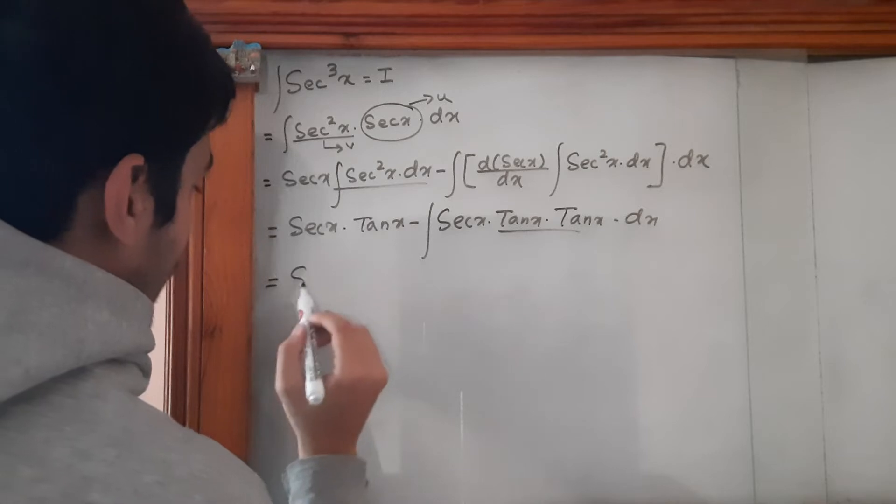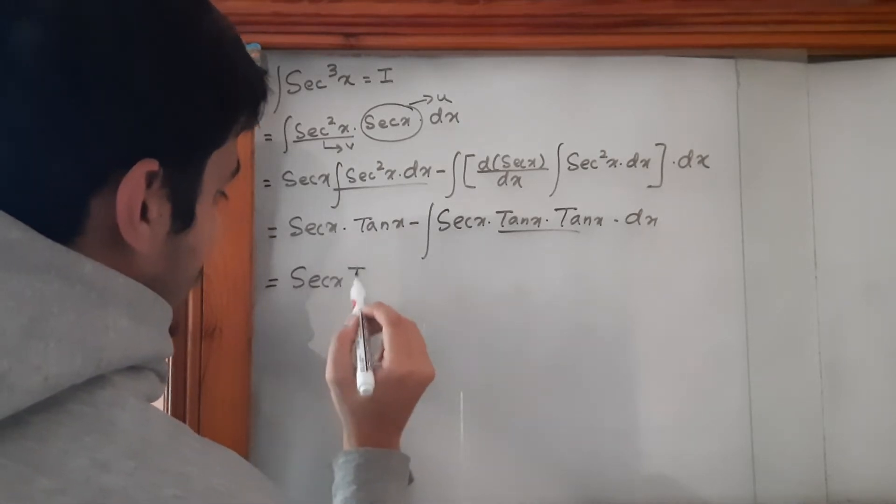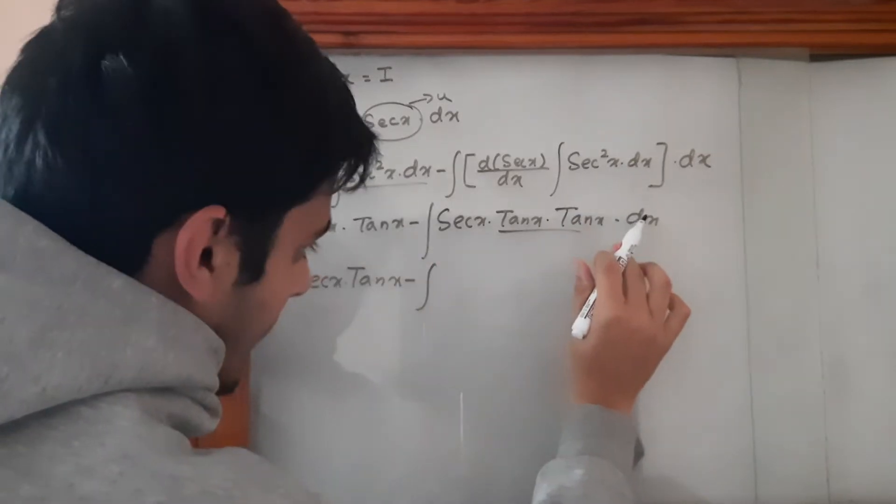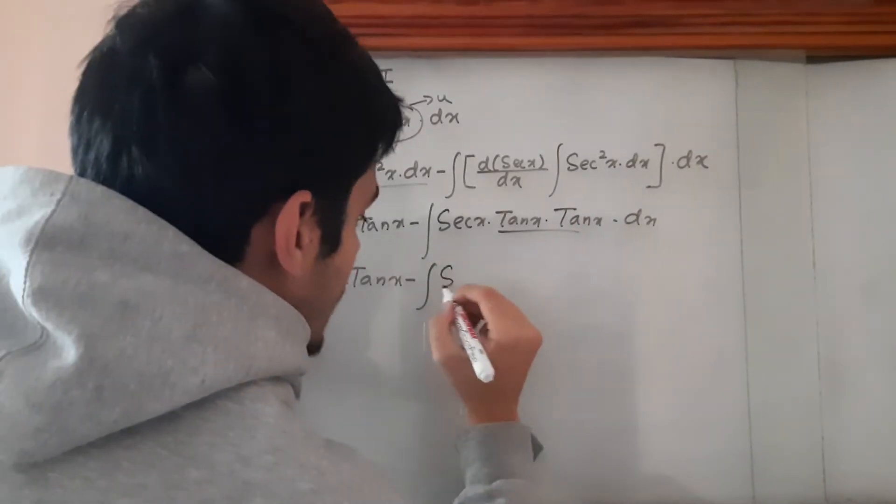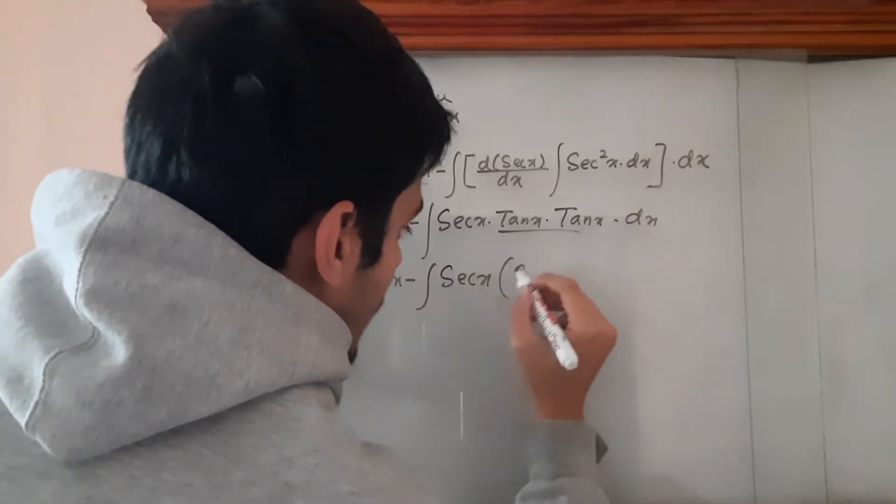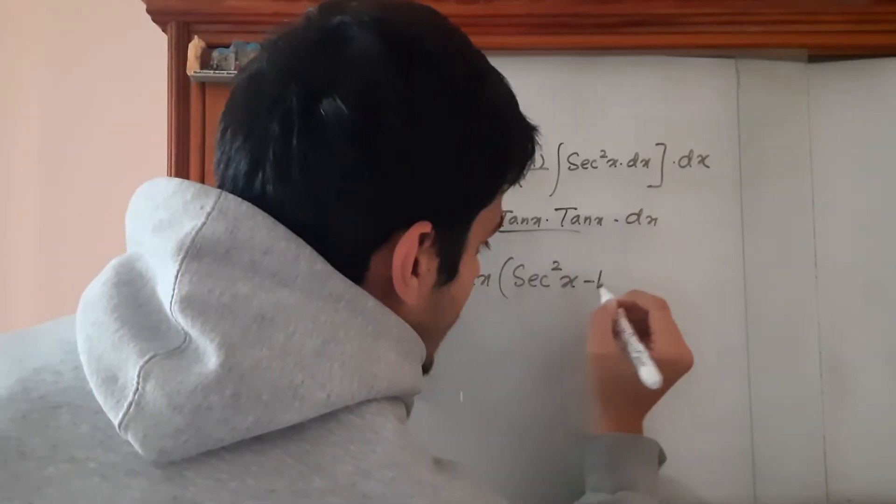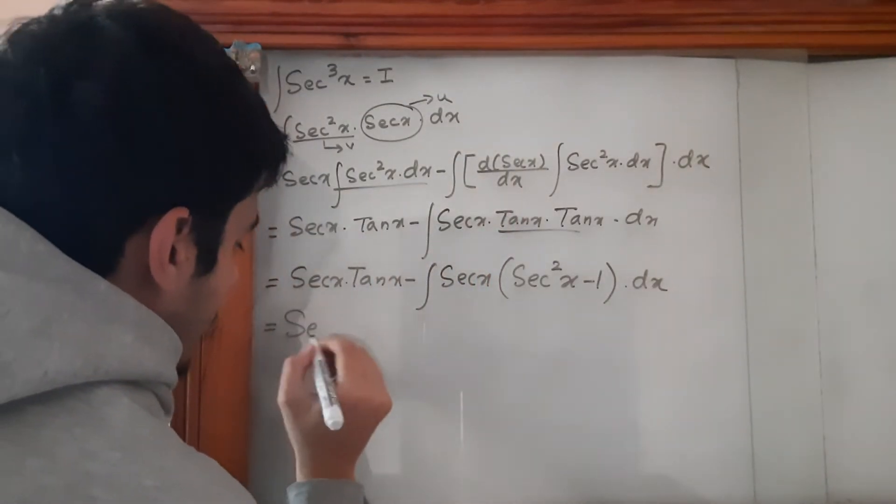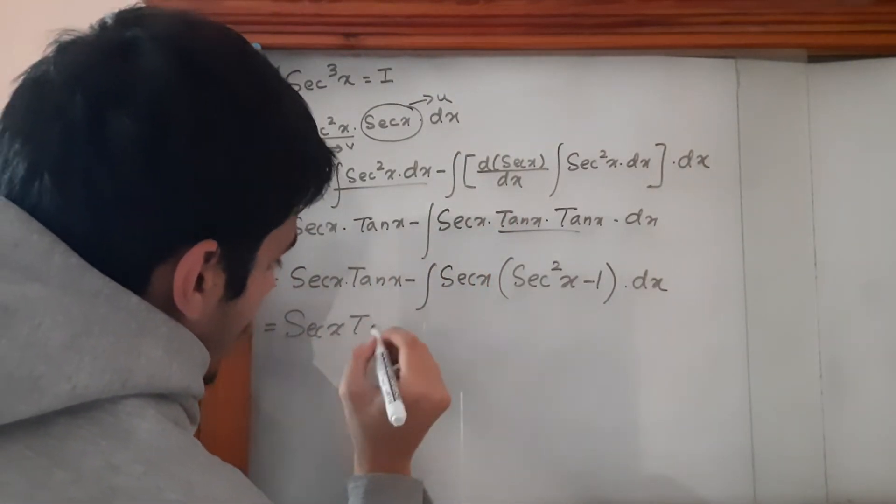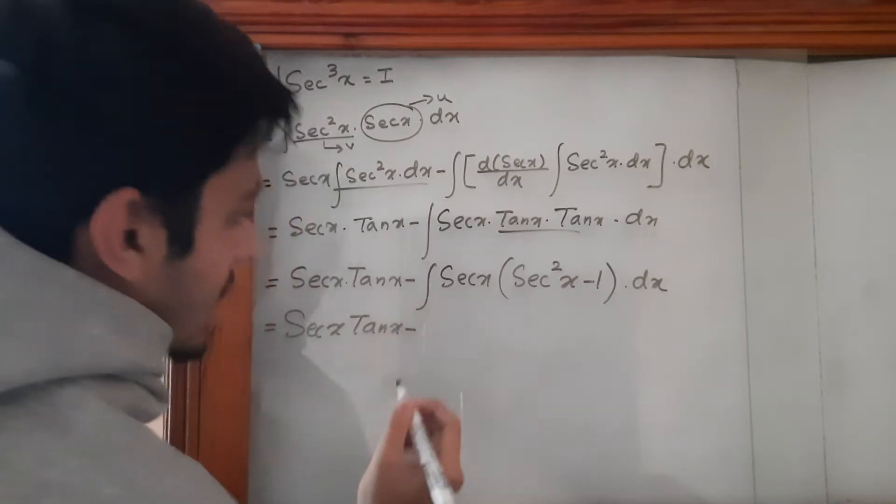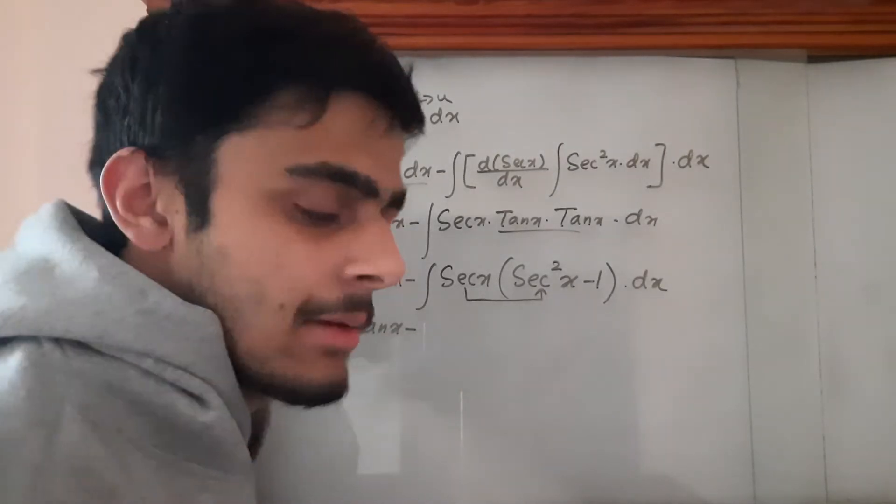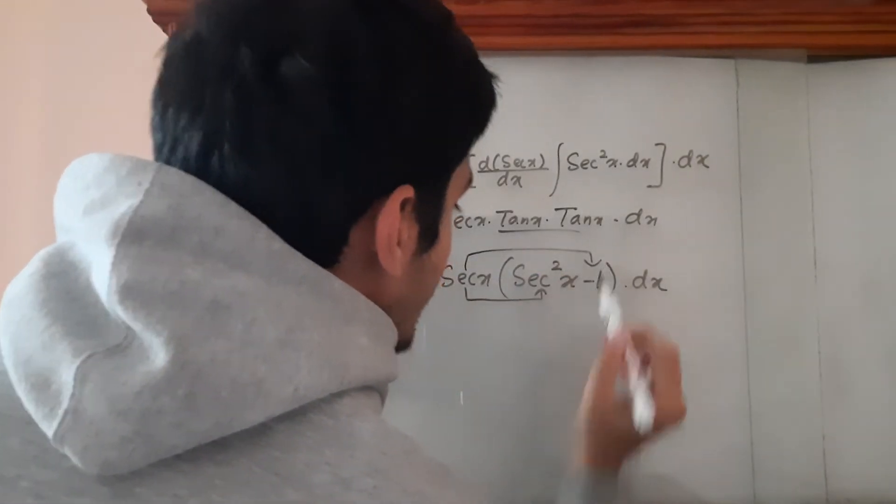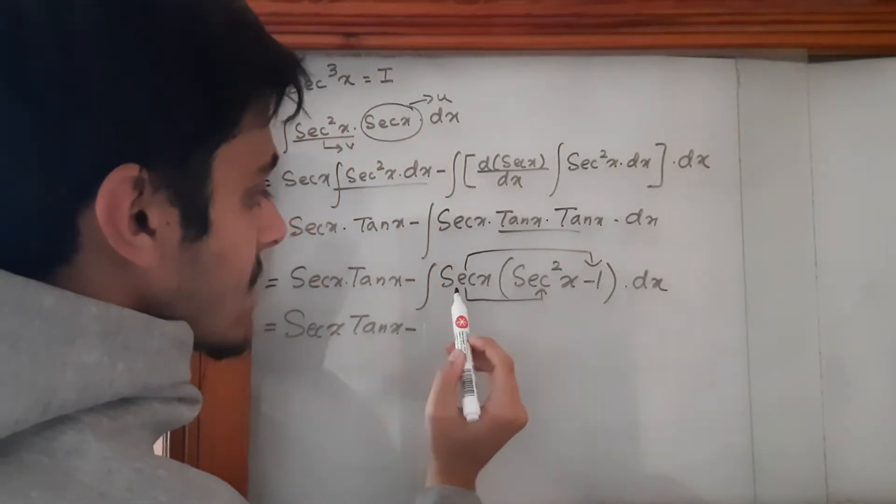So I = secx·tanx - ∫tan²x dx. We can express this as secx·tanx - ∫(sec²x - 1)dx, which becomes secx·tanx - ∫sec³x dx + ∫secx dx.